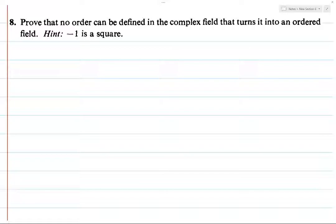So let's see here. This one you really have to do by contradiction. So assume for contradiction that C is an ordered field.